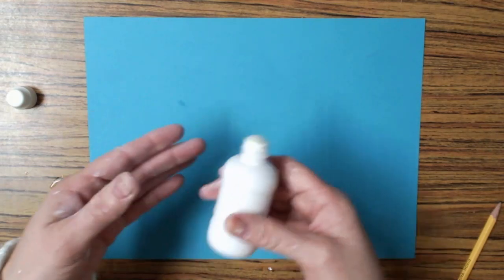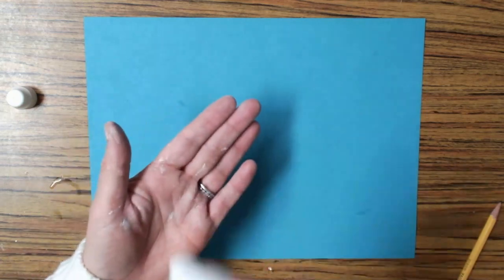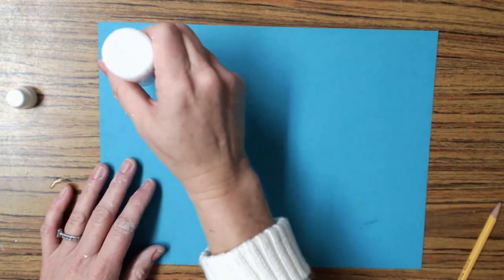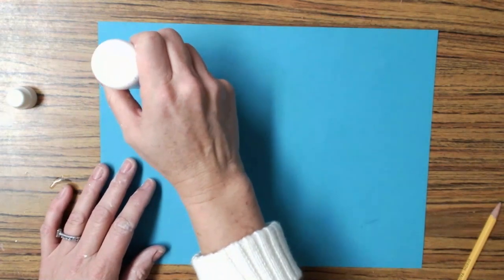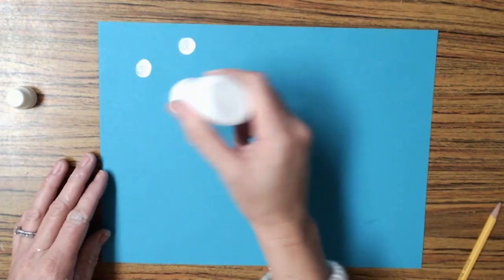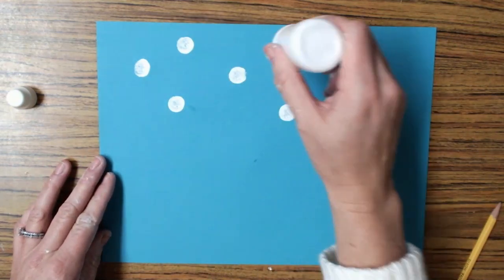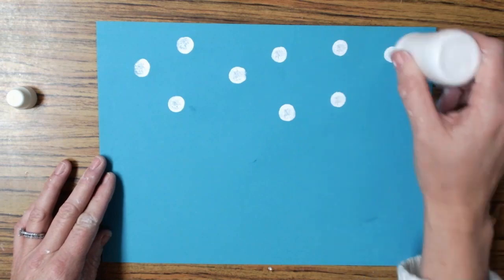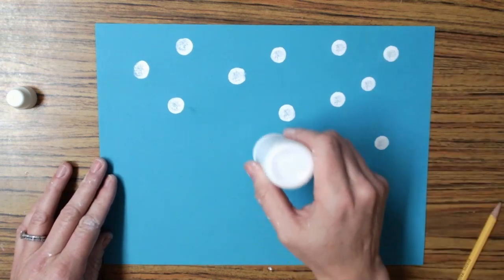You can't squeeze hard, you can't shake it without the cap off, and you can't bang it on the table. To begin making your snowy background, lightly and gently tap that marker onto your paper and you're going to see that these perfect little circles form.